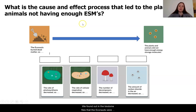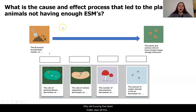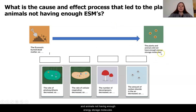We found out in the biodome files that the Econauts were burying their dead matter. But why did this occur? Why did this matter to the decomposers and to the rest of the ecosystem? Why did burying that dead matter start off this cause and effect process that eventually led to the plants and animals not having enough energy storage molecules?